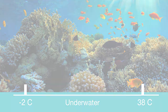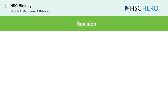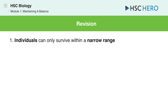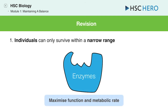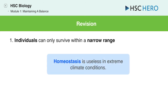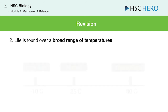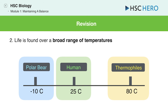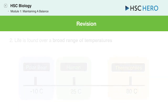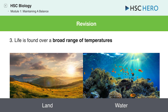And on that note, we've reached the end. Let's quickly revise what we've learnt today. Firstly, individuals can only survive within a narrow range, because enzymes require specific conditions in order to maximise function and metabolic rate. Whilst homeostasis allows a relatively stable internal environment to be achieved due to adaptations like behavioural, physiological, or structural adaptations, homeostasis is next to useless in extreme climate conditions. Secondly, life is found over a broad range of temperatures — polar bears, humans, and thermophiles all live in different narrow temperature ranges, but they are merely three examples of the broad range of temperatures that life can exist in. Lastly, temperatures will vary more on land than they do in water.